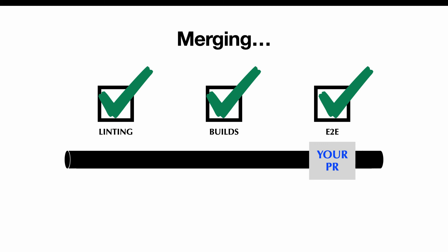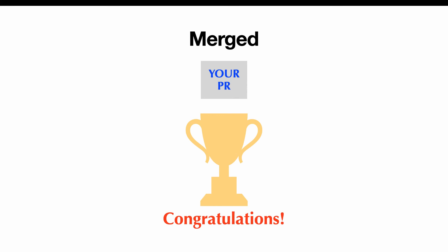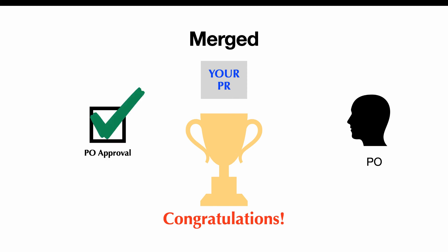If everything passes, all checks are okay — your PR is approved, QA approved, all pipeline checks have passed, and your PR is in ready-to-merge status. The last thing you need to do is go and actually merge it. Congratulations, you've merged your PR! The workflow is pretty much done. There's one last thing, which may come right before or after merging: talk to your PO, have them take a look at the PR, and get their approval.